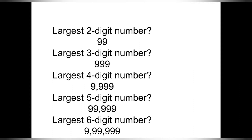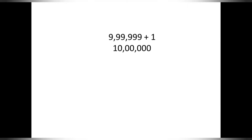Now, what if we add one number to 9,99,999? Yes, it will be 10 lakh. 10 lakh is a 7-digit number. Till 9,99,999 it was only a 6-digit number. As we add one number to it, it becomes a 7-digit number — that is 10 lakh. And 10 lakh is the smallest 7-digit number.